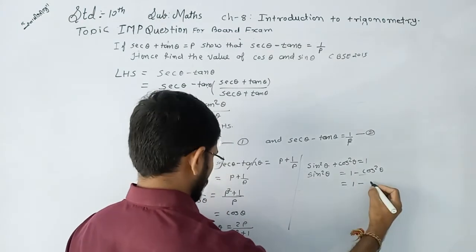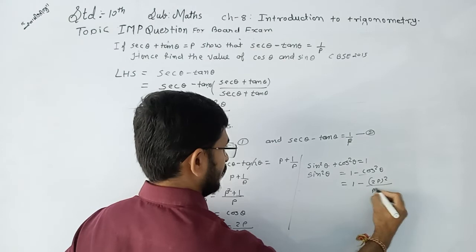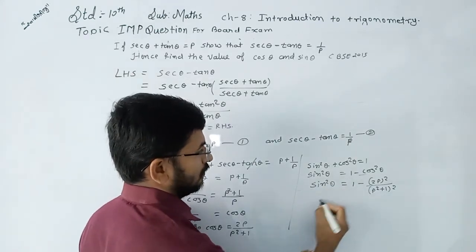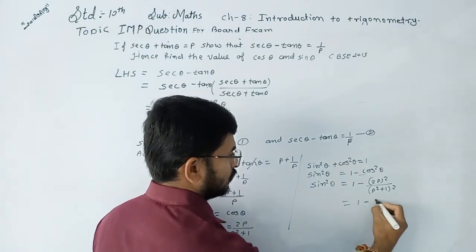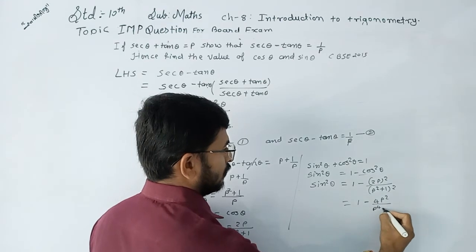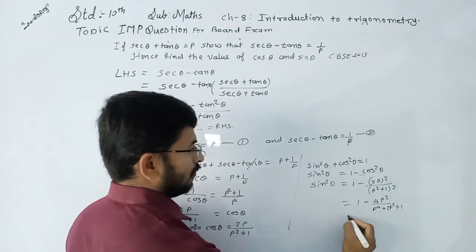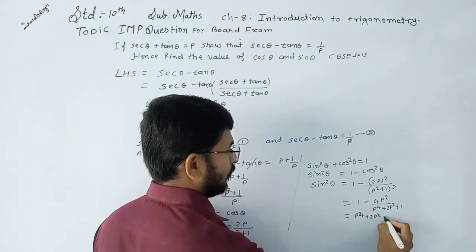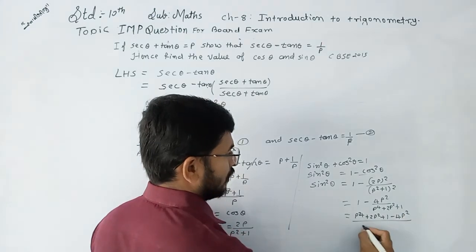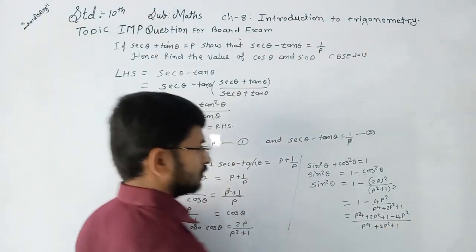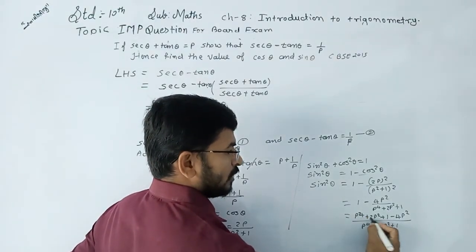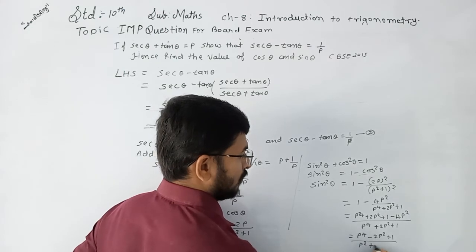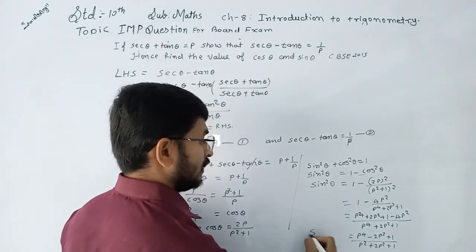sin²θ = 1 minus (2p upon p² + 1)². Simplifying: 1 minus 4p² upon (p² + 1)². Expanding the denominator: p⁴ + 2p² + 1. So we get (p⁴ + 2p² + 1 - 4p²) divided by (p⁴ + 2p² + 1), which becomes (p⁴ - 2p² + 1) upon (p² + 1)².